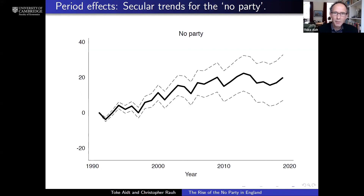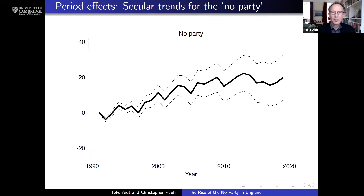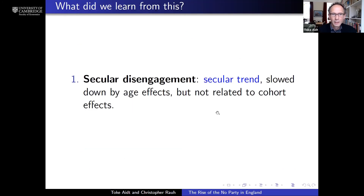The last possibility is the period effect — the secular trend. On the x-axis we now have years, from 1990 up to the most recent survey round in 2020, again normalizing support for the no party to zero at the beginning. We can see that period after period there has been a secular increase in the fraction of the population that has switched away from the main parties and no longer identifies with any of them. Behind the rise of the no party there appears to be a secular trend, slowed down by age effects but unrelated to cohort effects — it is about secular disengagement.